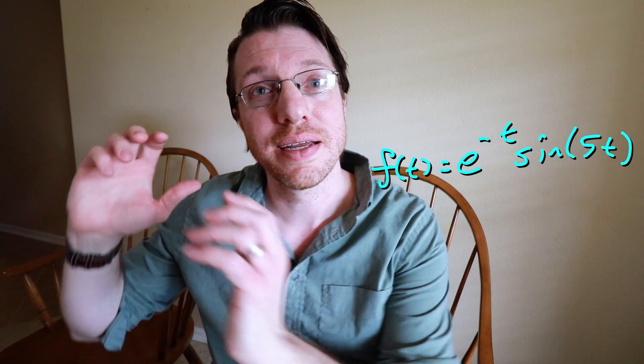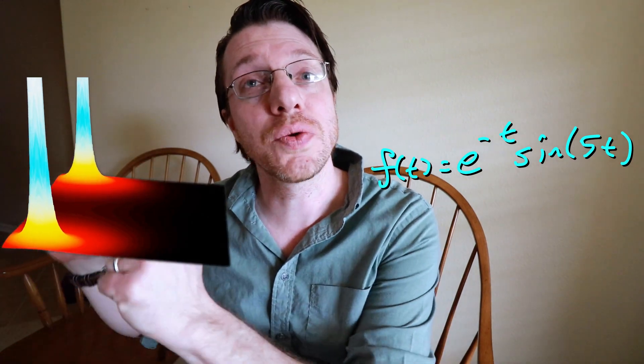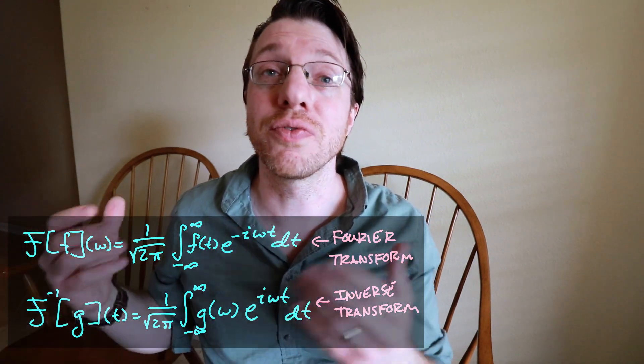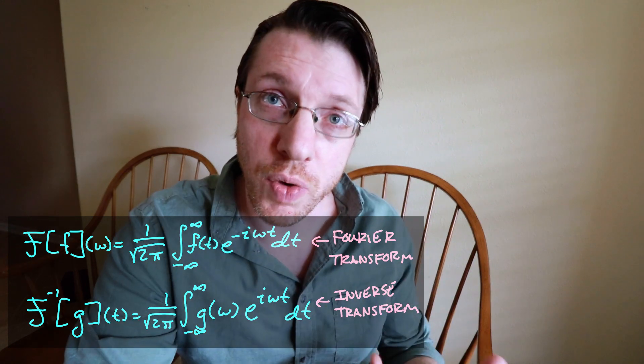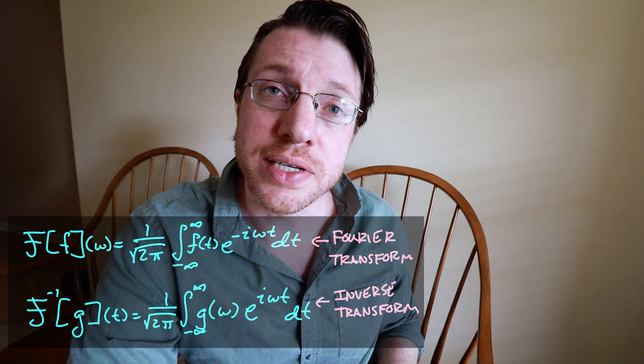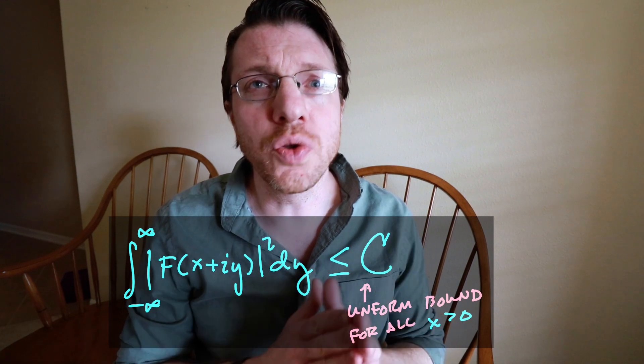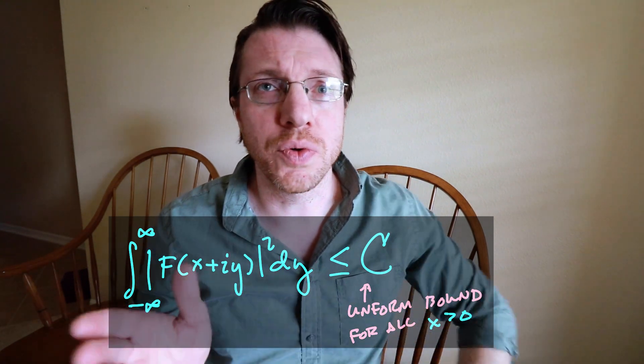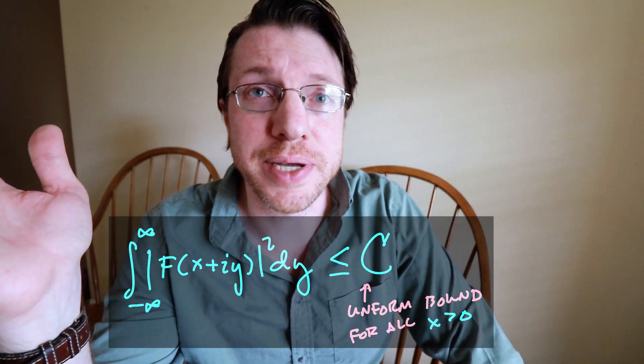We can take an L2 signal and get a Laplace transform out of it, and we can also go backwards. The way we go backwards is we'll fashion an inverse for the Laplace transform out of the inverse Fourier transform. Another requirement on these analytic functions is that along each vertical strip it is an L2 signal, and moreover the norm of these L2 signals is uniformly bounded as you move through all the vertical lines in the right half of the complex plane.